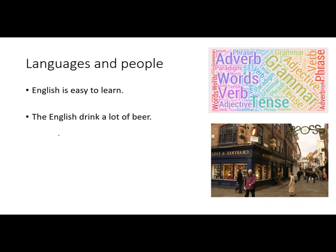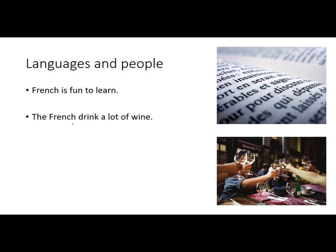Languages and people: for languages, it's singular. 'English is easy to learn.' But if I put 'the' in front of it, then I'm talking about the English people — 'The English drink a lot of beer.' This expression means the English people, and it's plural. Another example: 'French is fun to learn' — this is the language, it's singular. 'The French drink a lot of wine' — this is talking about the French people in general, so that is plural.